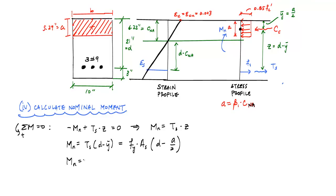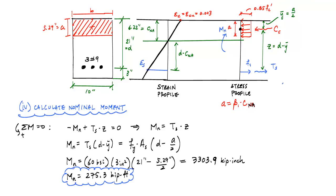Times the depth, which was 21 inches, minus A, which we know is 5.29 inches, divided by 2. And if I plug and chug through this, I'll get my nominal moment is 3,303.9 kip inch, and if I convert that into kip feet, I will get 275.3 kip feet. All right, so that's our nominal moment.